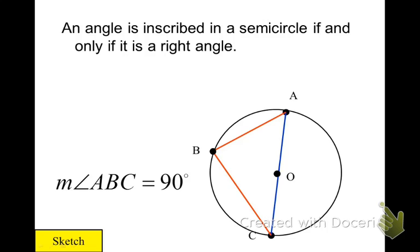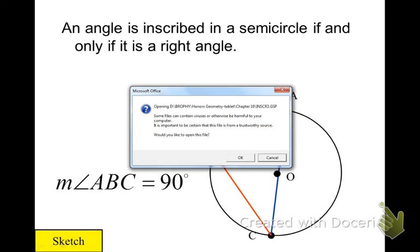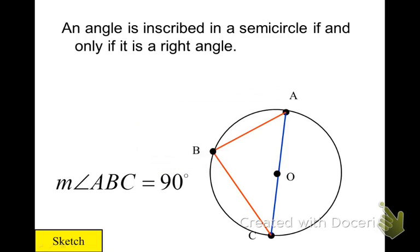That means it has to be 90. It doesn't matter where that vertex is, it will always be true.